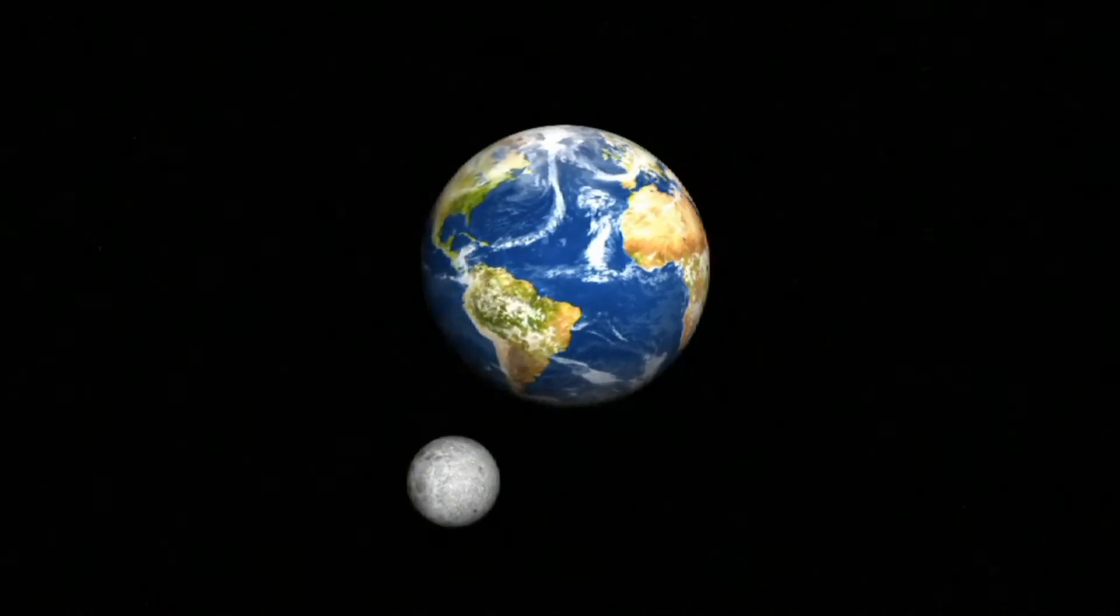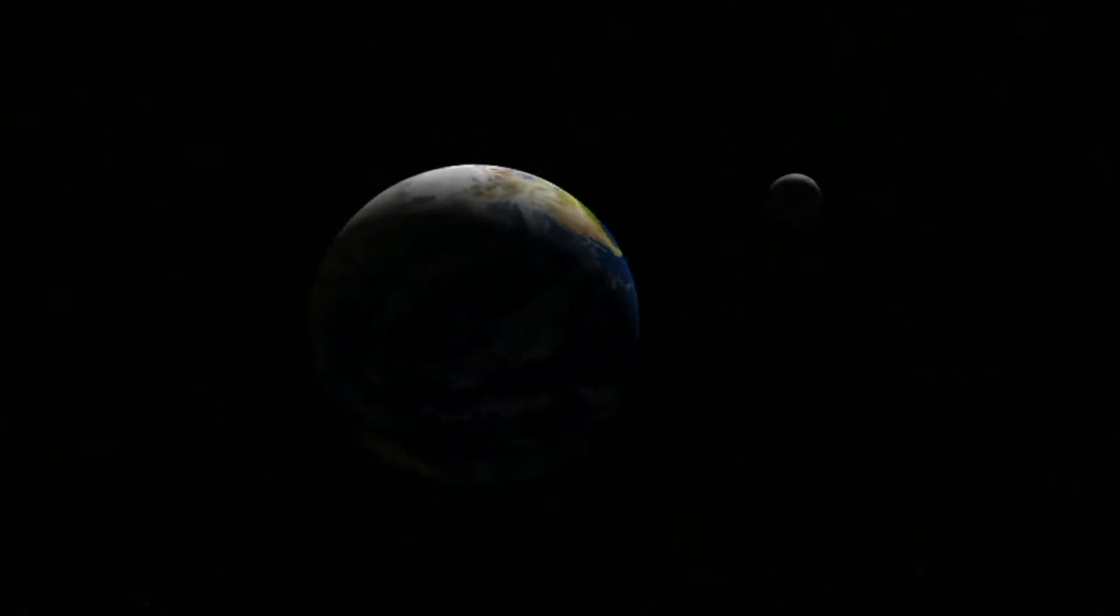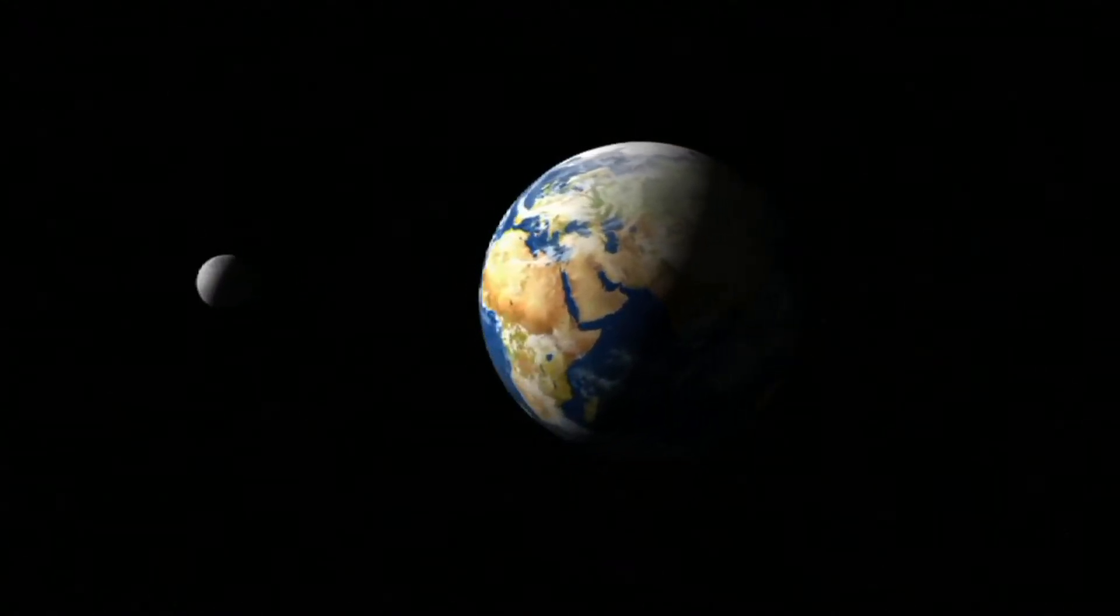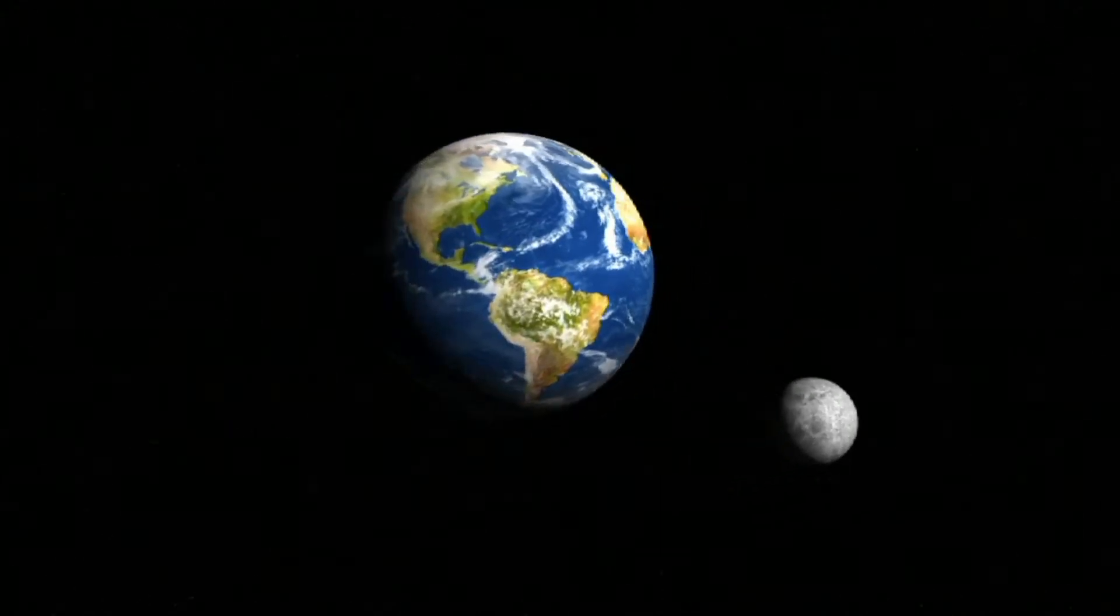The phases of the moon are produced by the moon's orbit around the Earth. There are eight phases of the moon caused by the moon's orbit around the Earth and its position in relation to the sun.